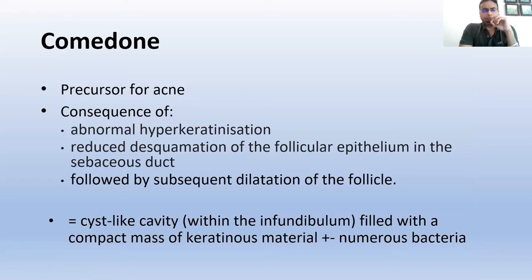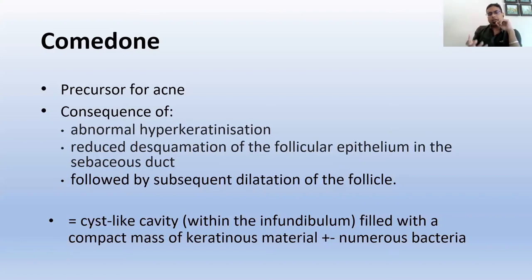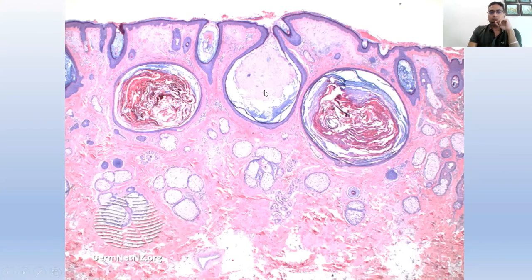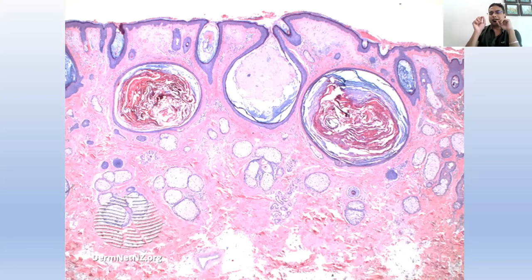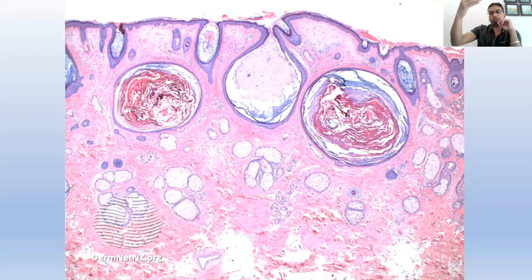Comedones, as we know, are precursors for acne. They are a consequence of abnormal hyperkeratinization and reduced desquamation of the follicular epithelium near the infundibulum, followed by subsequent dilatation of the follicle underneath, leading to a cyst-like cavity filled with compact keratinous material, sebaceous material, and numerous bacteria. Patients with a number of comedones on the face often do have milia in between. Milia are basically comedone-like cysts, not necessarily always derived from the infundibulum, but on the face they are derived from the infundibulum just like comedones — but cut off both from the surface and from underneath.